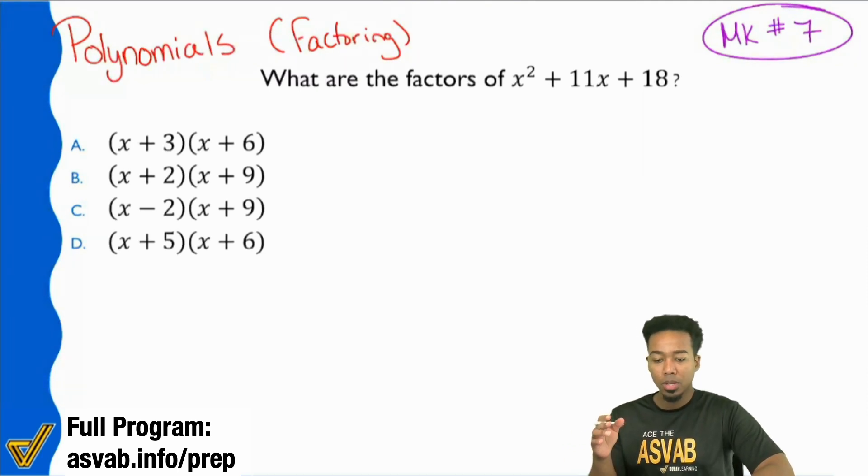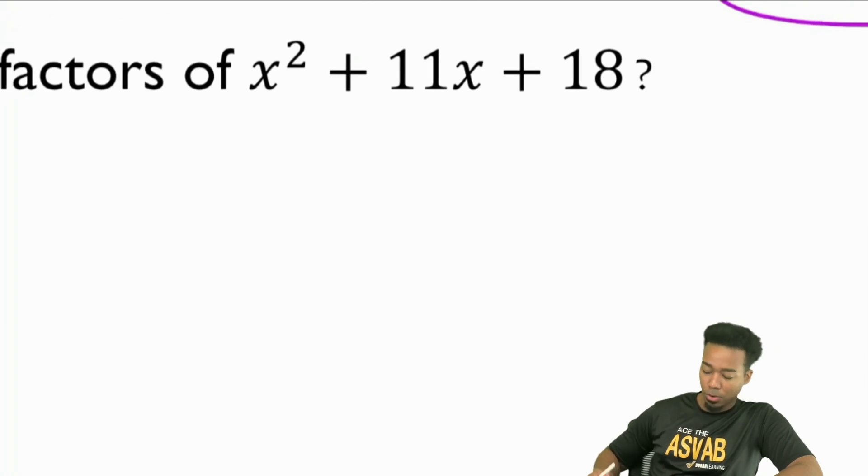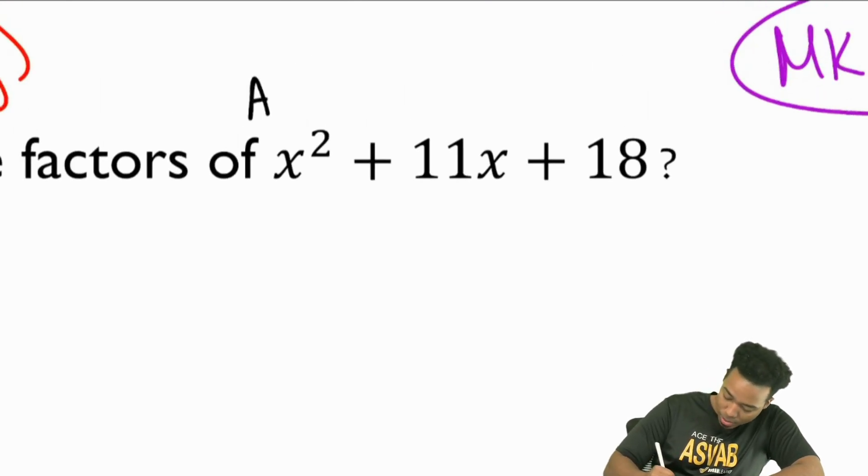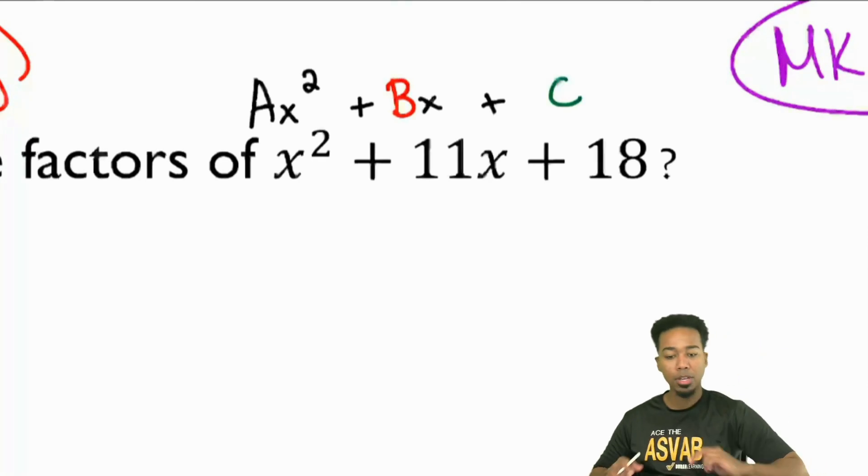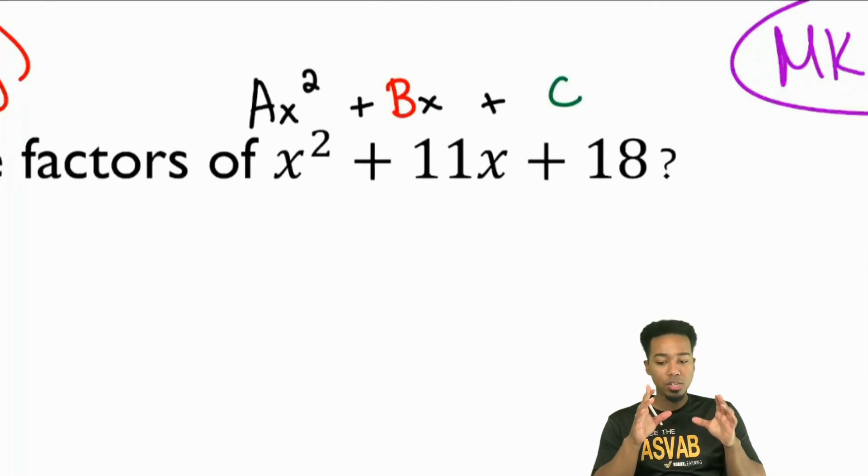Here's how this works. Basically, if you're trying to factor a polynomial, a trinomial, three terms, first we need to see that this is in the form Ax² + Bx + C. I'm gonna use different colors here. I'm specifically gonna mark the B and the C.